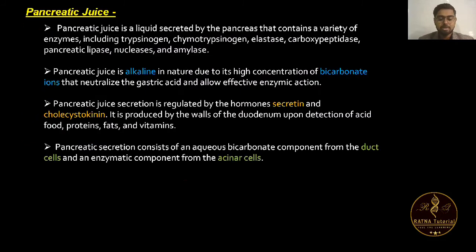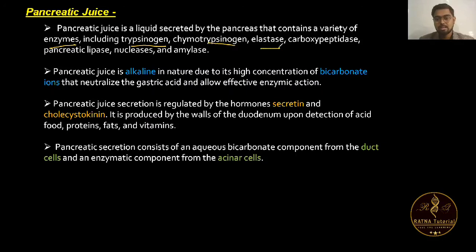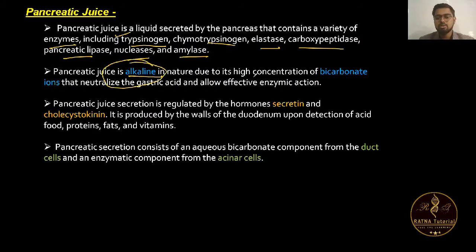Pancreatic juice is secreted by the pancreas. It is a liquid containing a variety of enzymes, including trypsinogen, chymotrypsinogen, elastase, carboxypeptidase, pancreatic lipase, nucleases, and amylase. Pancreatic juice is alkaline in nature due to its high concentration of bicarbonate ions.